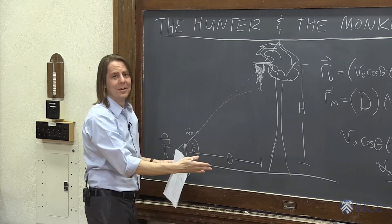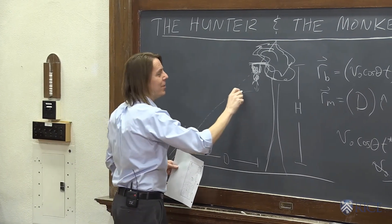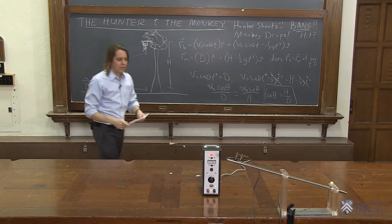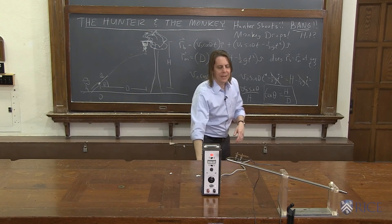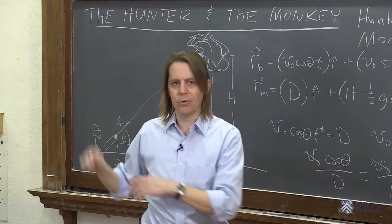In fact, the monkey has to drop. If you shoot and the monkey doesn't drop, the bullet would go under. So let's see if it's true in the real world. We're going to come around here and shoot the gun. The monkey will drop at the same time.